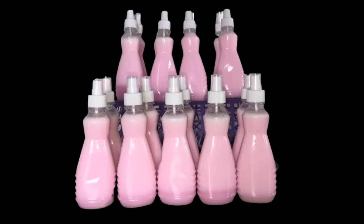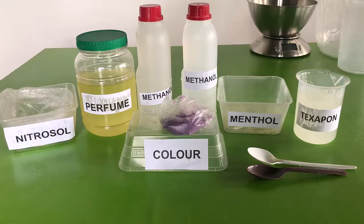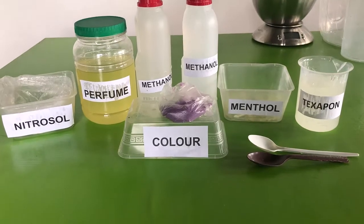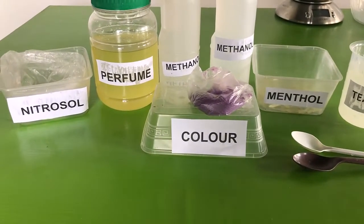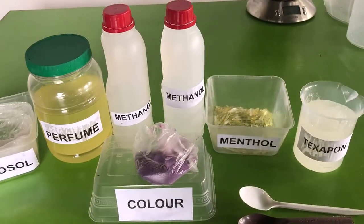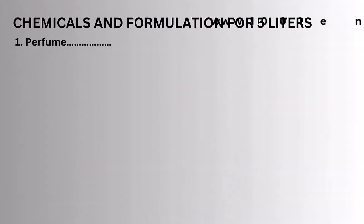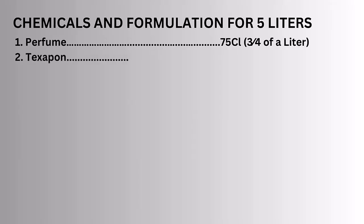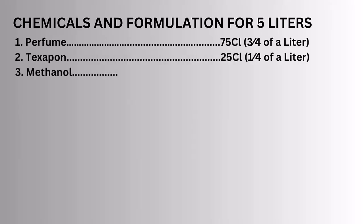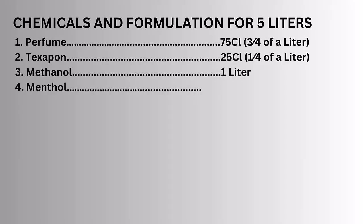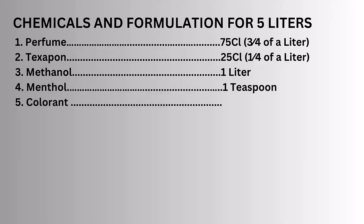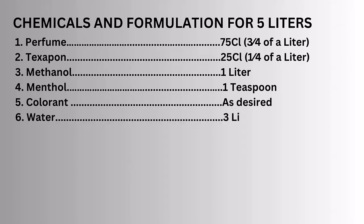Thereafter, make the decision whether to continue to buy expensive air fresheners or to embark on producing them yourself, saving you a lot of money. Here are the chemicals for the production of five liters of liquid air freshener: nitrosol, perfume, methanol, menthol, texapol, and color. Formulation: perfume 75cl, texapol 25cl, methanol one liter, menthol one teaspoon, color as desired, water three liters, nitrosol one teaspoon or slightly more.